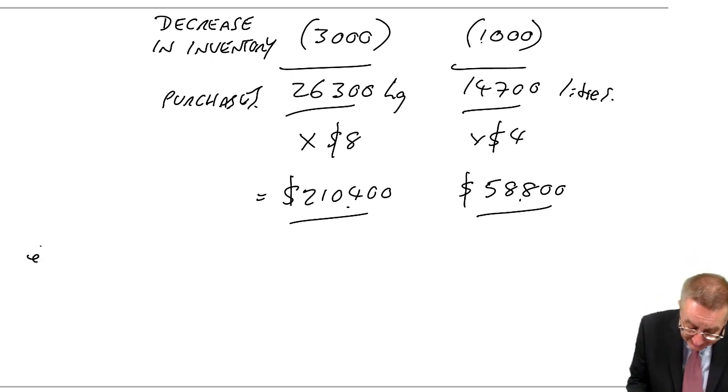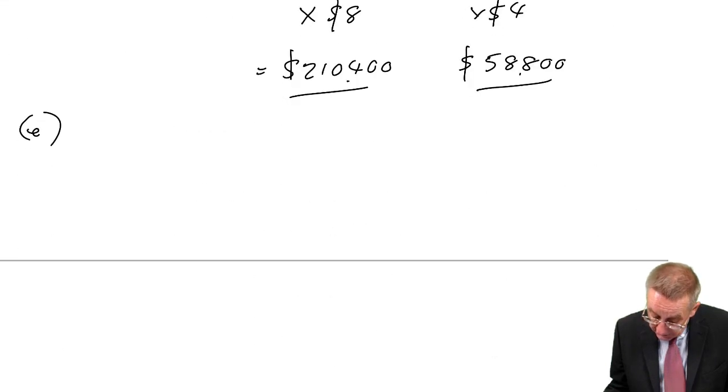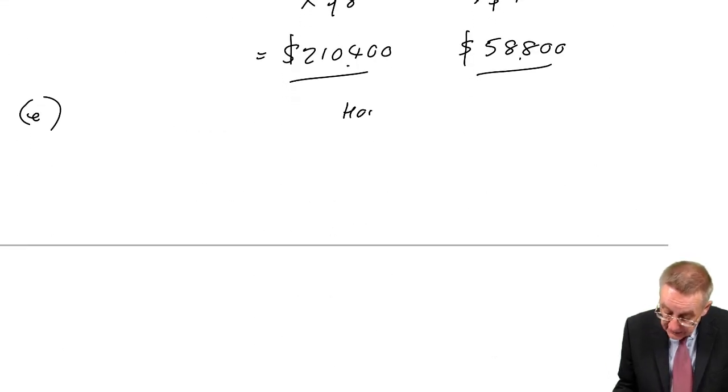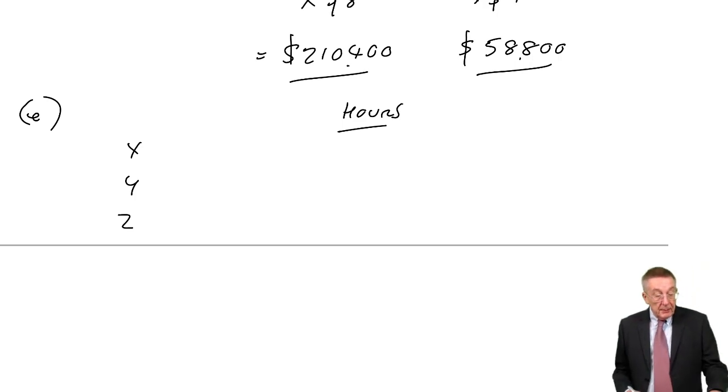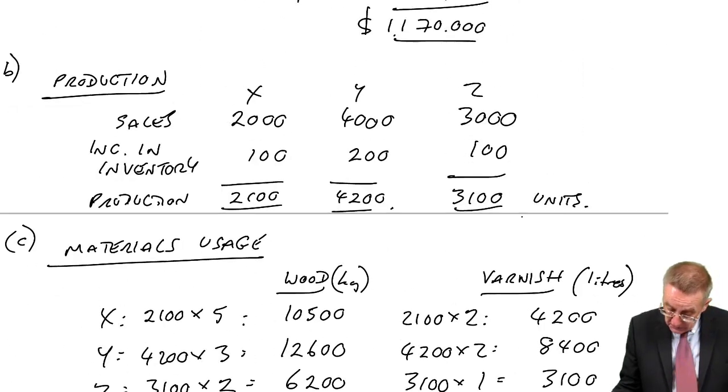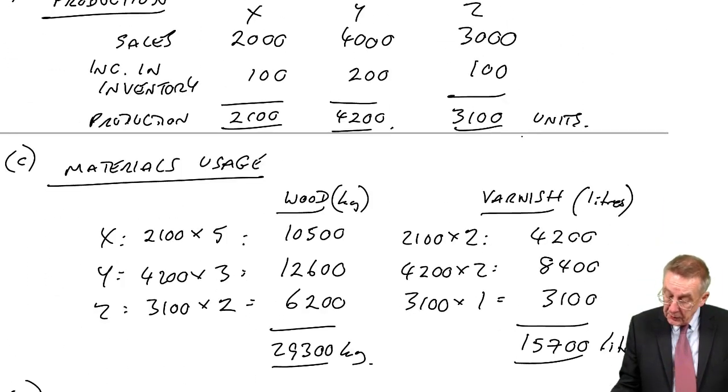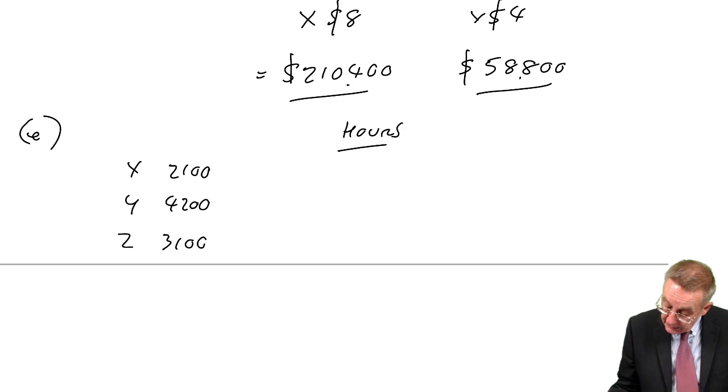One final one. E, a labour budget in hours and value. I'll do it in hours first. We're told at the bottom there's standard hours per unit. How many units are we producing of each? We worked that out earlier: 2,100, 4,200, 3,100.